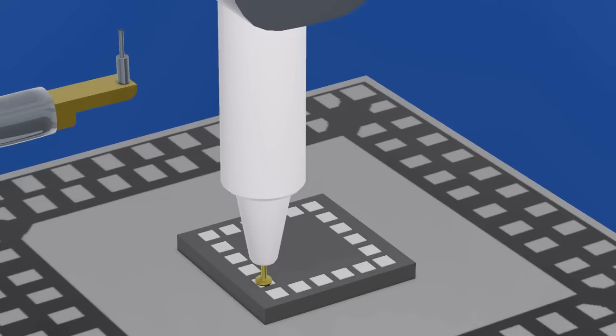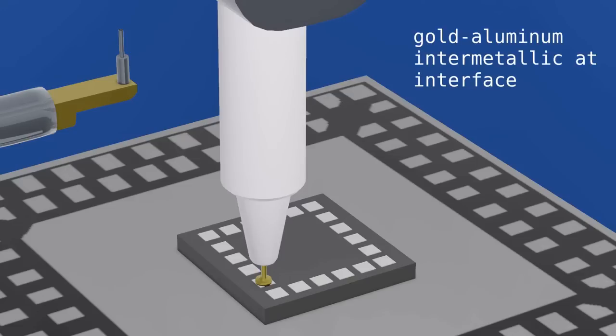The flattened ball should also be symmetrical about the axis perpendicular to the die surface. A properly formed bond should also have a small amount of gold aluminum intermetallic at the interface between the bond wire and the bond pad metallization.